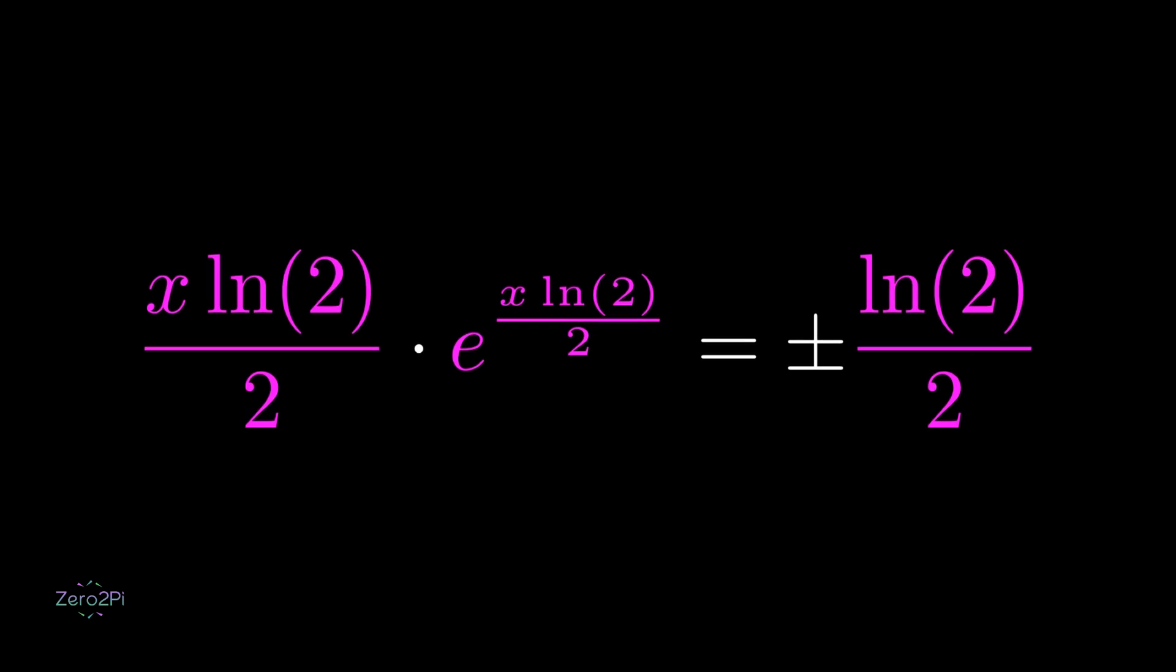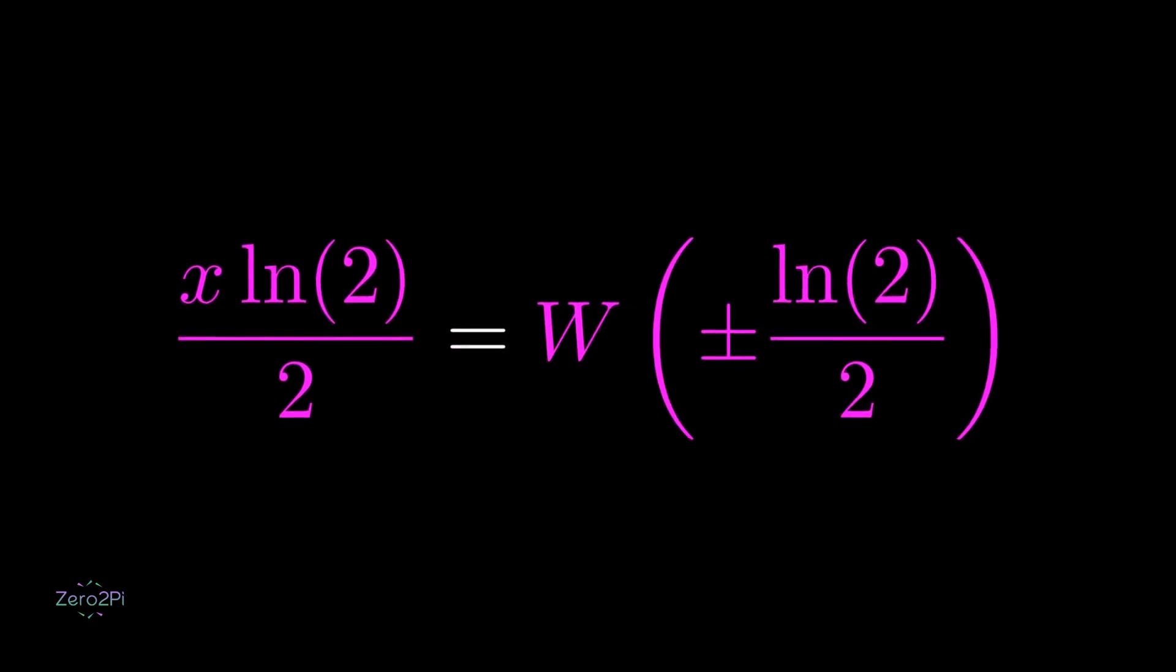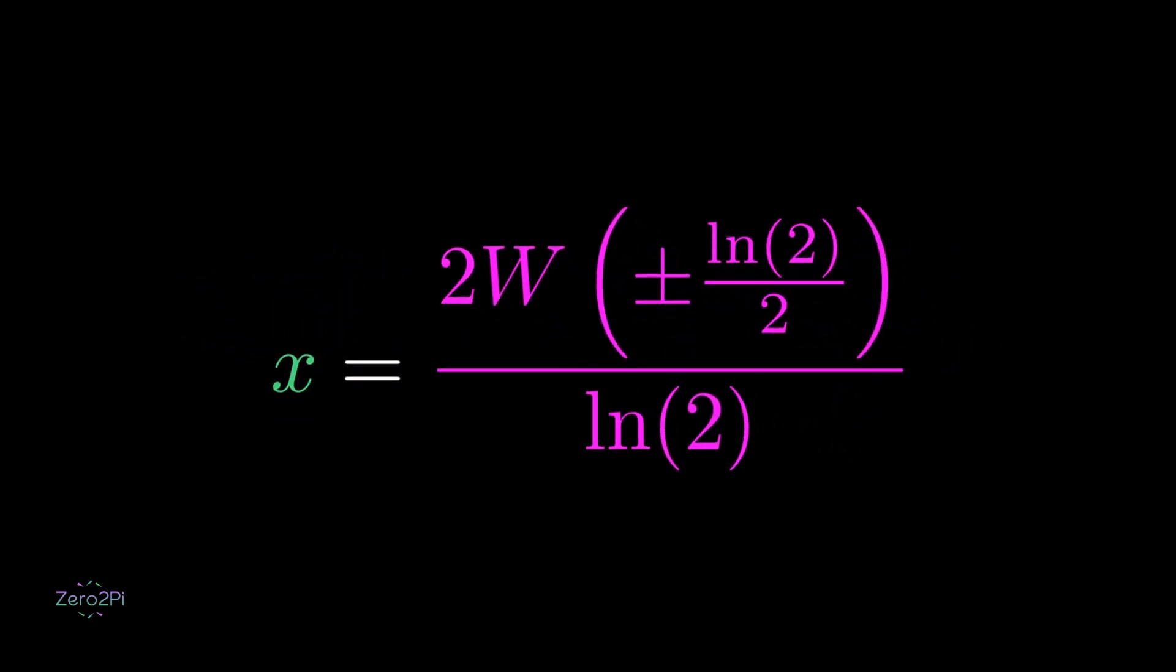And now we have the required expression, y e to the y, and we can take Lambert W function to return y, and moving the natural logarithm of 2 over 2 to the right side.